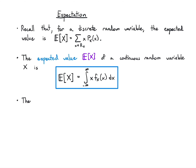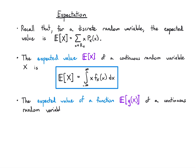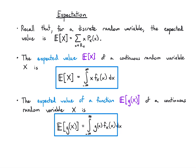We can do the same for the expected value of a function. If we want E[g(x)] for a continuous random variable x, we just replace the sum with an integral. So we have the integral from minus infinity to infinity of g(x) times the PDF dx.